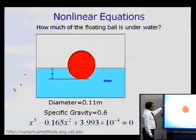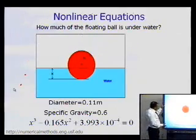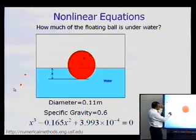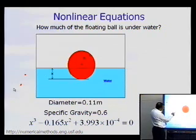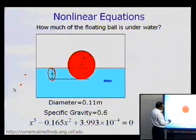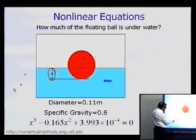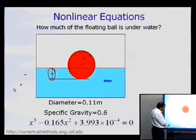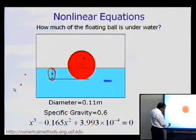For the first case — nonlinear equations — a simple example is that of a floating ball. We want to figure out how much of the ball is submerged under water. If the diameter of the ball is 0.11 meters and the specific gravity is 0.6, you are able to derive a nonlinear equation.